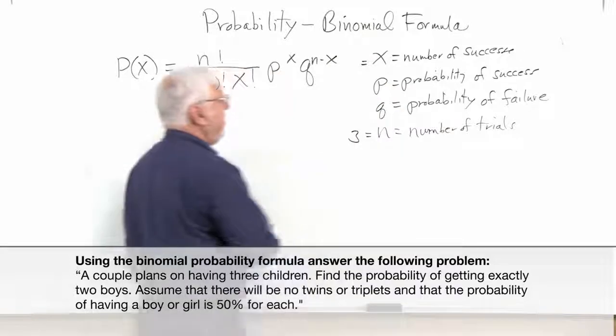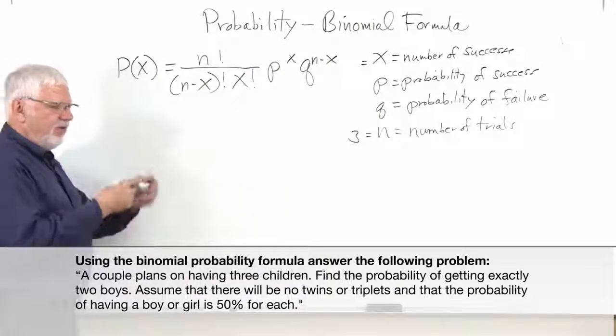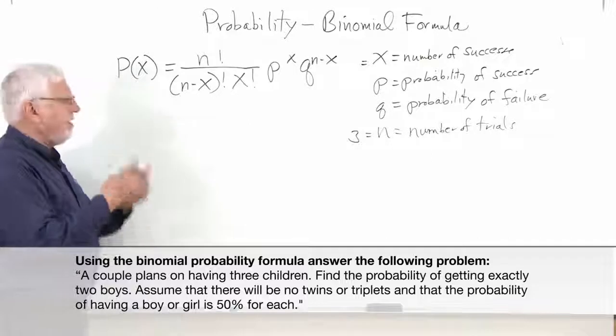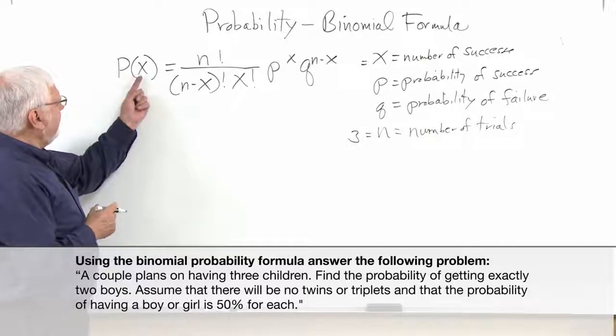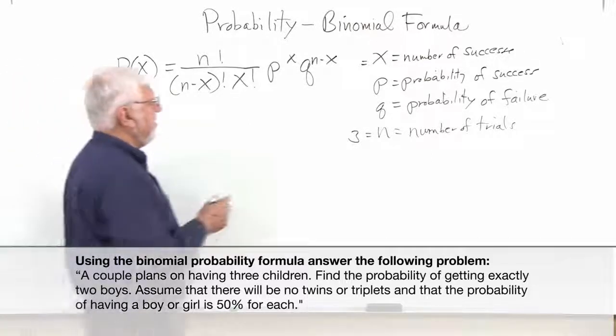What's our x going to be? Number of successes. And so having a boy is going to be defined as success, and having a girl not success. So the number of boys we want is two.